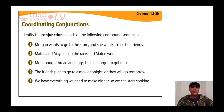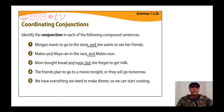Number three: 'Mom bought bread and eggs, but she forgot to get milk.' One conjunction is 'and' — that combined the nouns bread and eggs. The other conjunction is 'but' — that combined the sentence 'Mom bought bread and eggs' with 'she forgot to get milk,' making this a compound sentence.